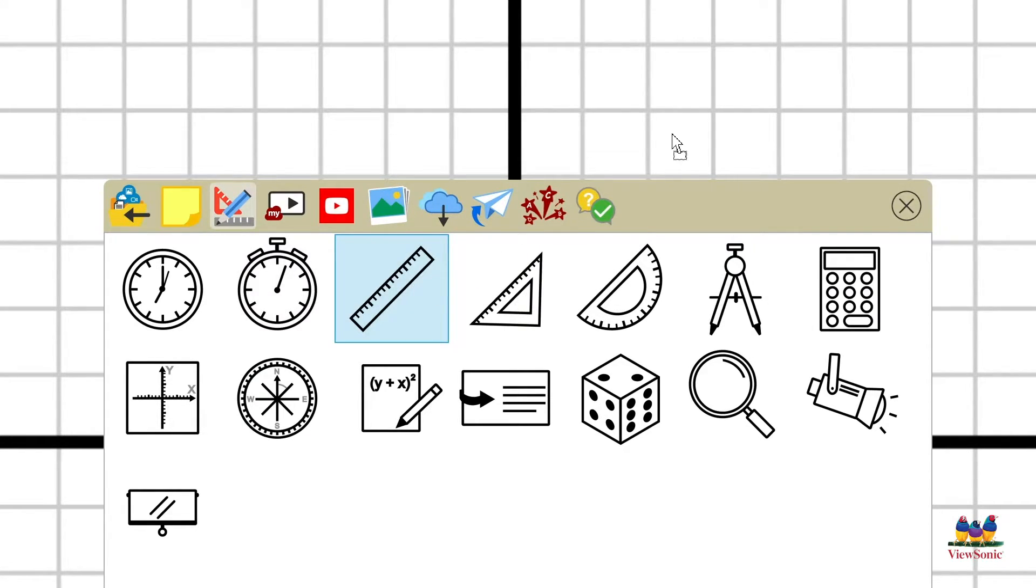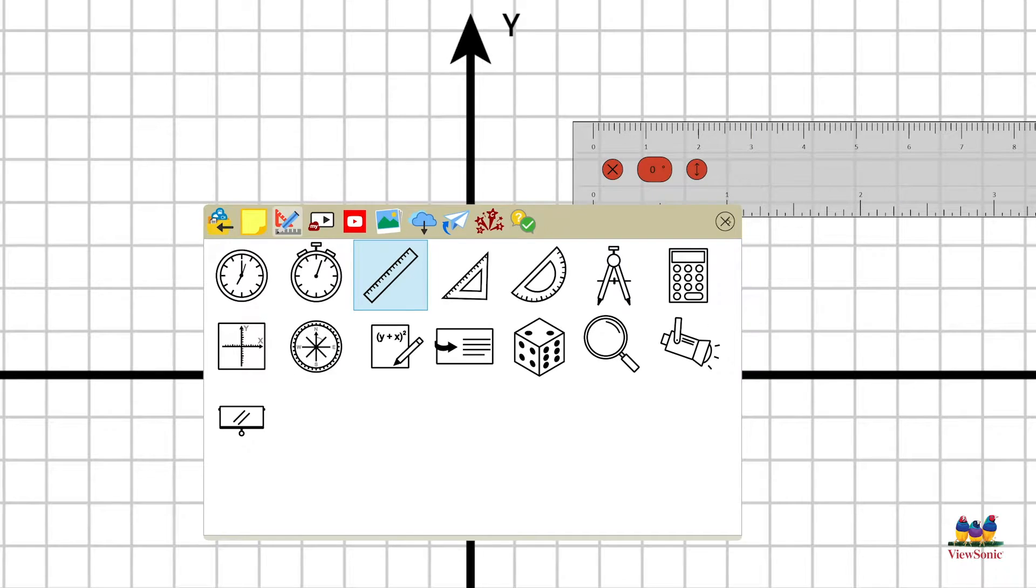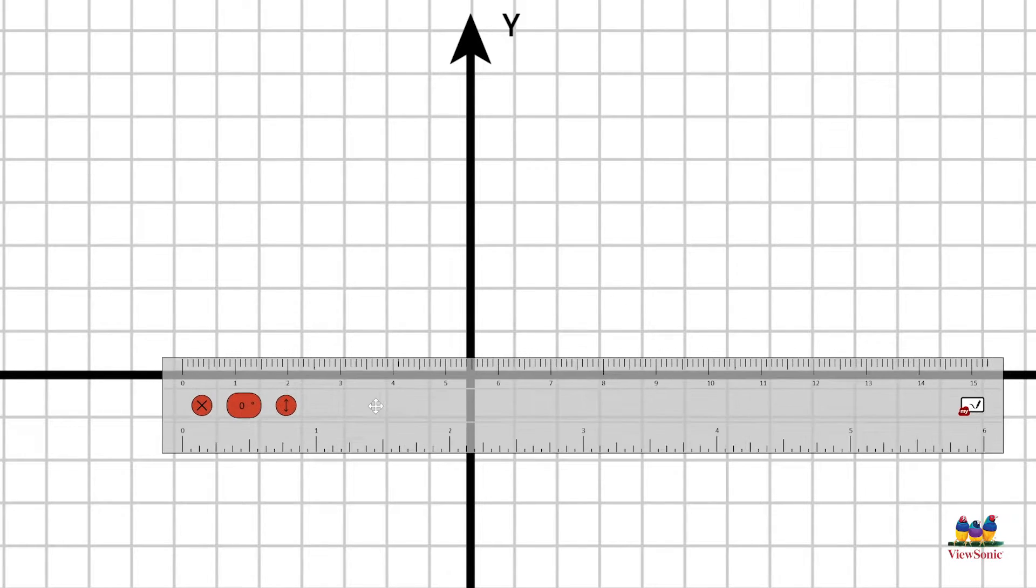Click and drag onto your canvas or give it a double tap. To move the ruler, just grab it in the middle. Touch or click in the middle and you can drag it around.